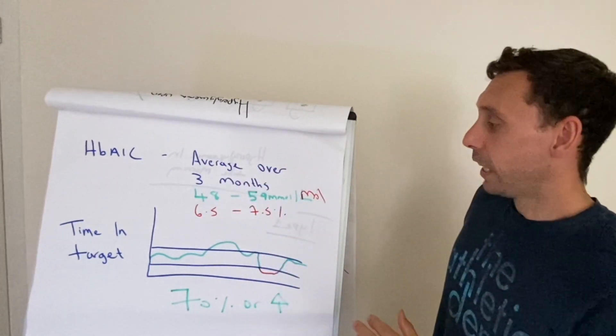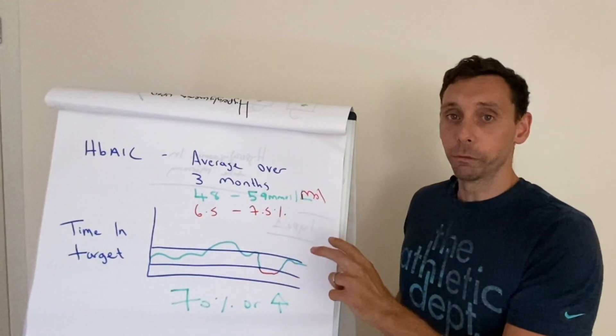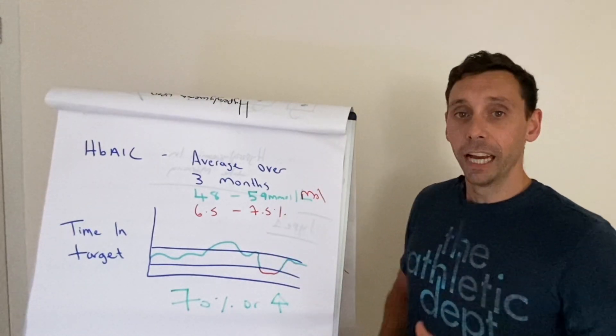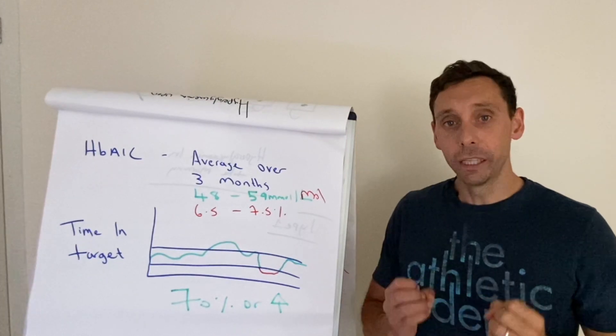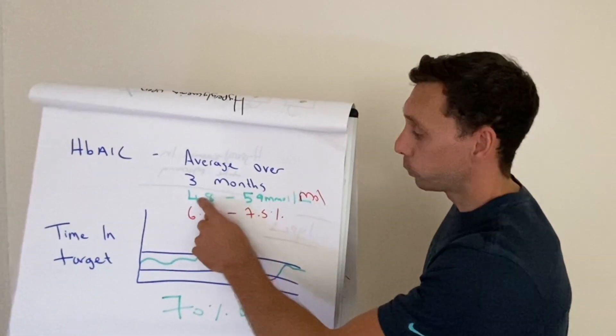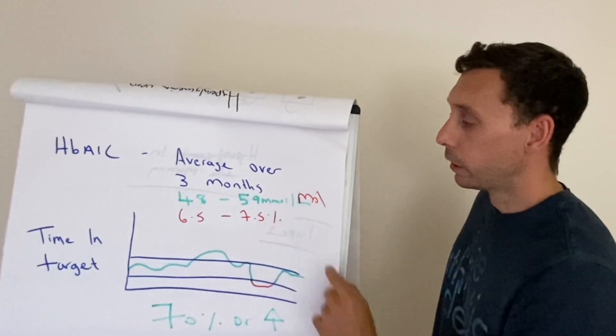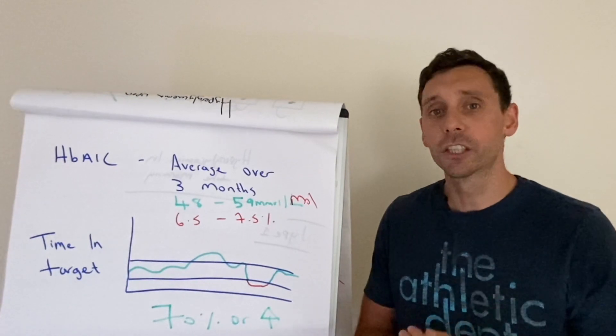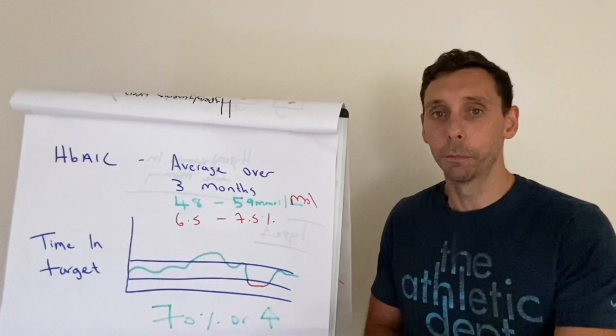So it's a three-month average. And we can measure this in two different measurements, depending on where you live. The first is in millimoles per mole. And ideally, what we want for people when they have the HbA1c test taken, it is between 48 and 59, which loosely translates to a glucose level in single figures, but it's slightly above what you'd find in someone without diabetes.